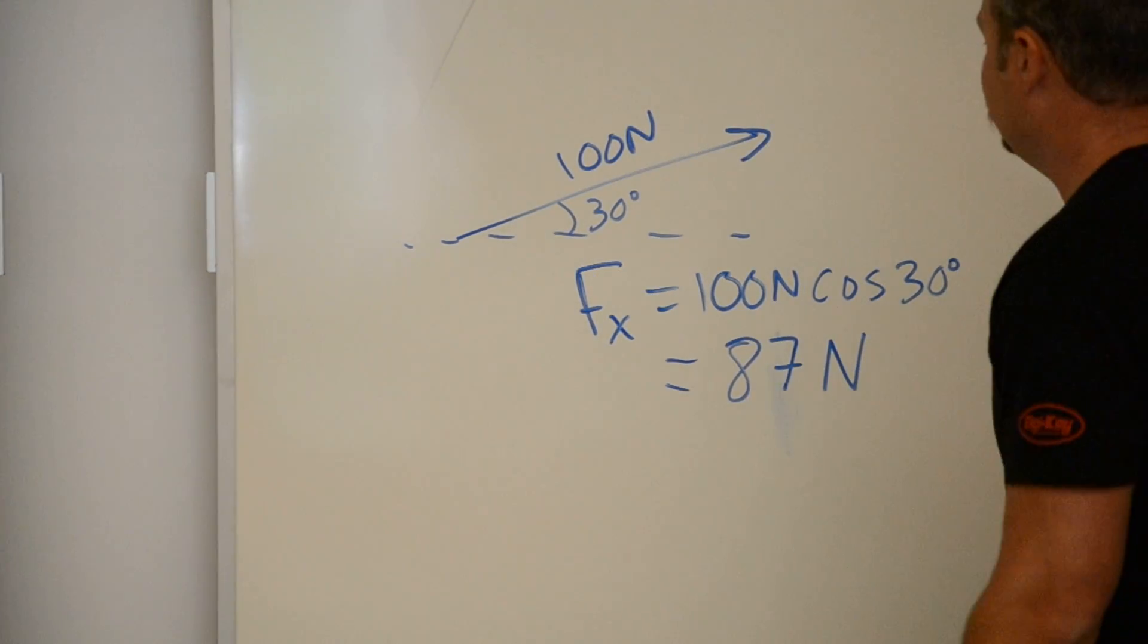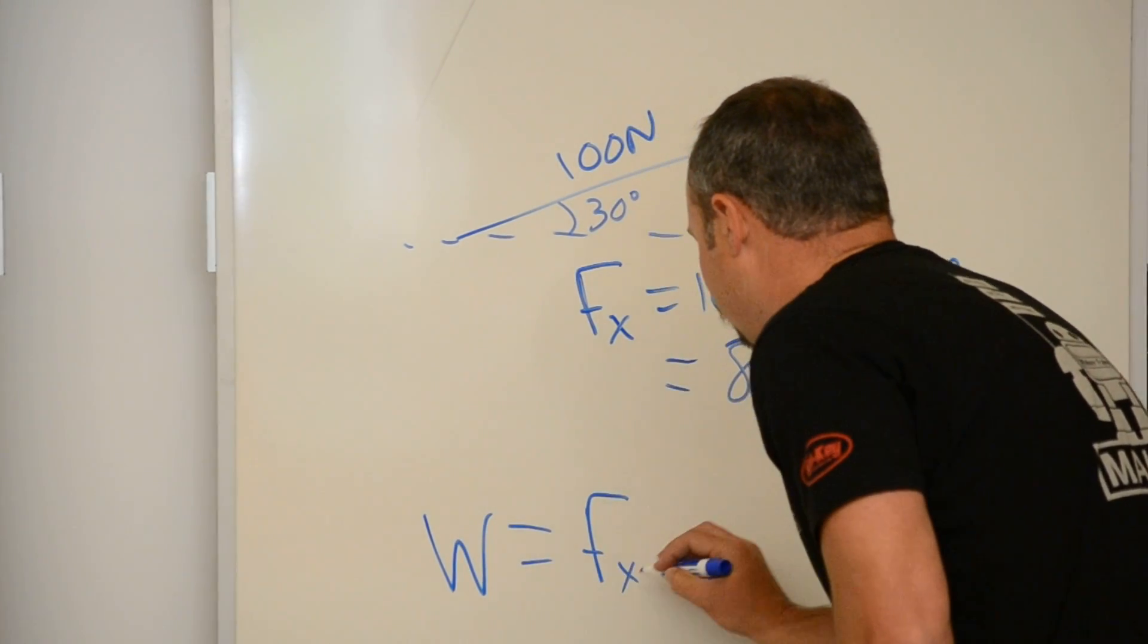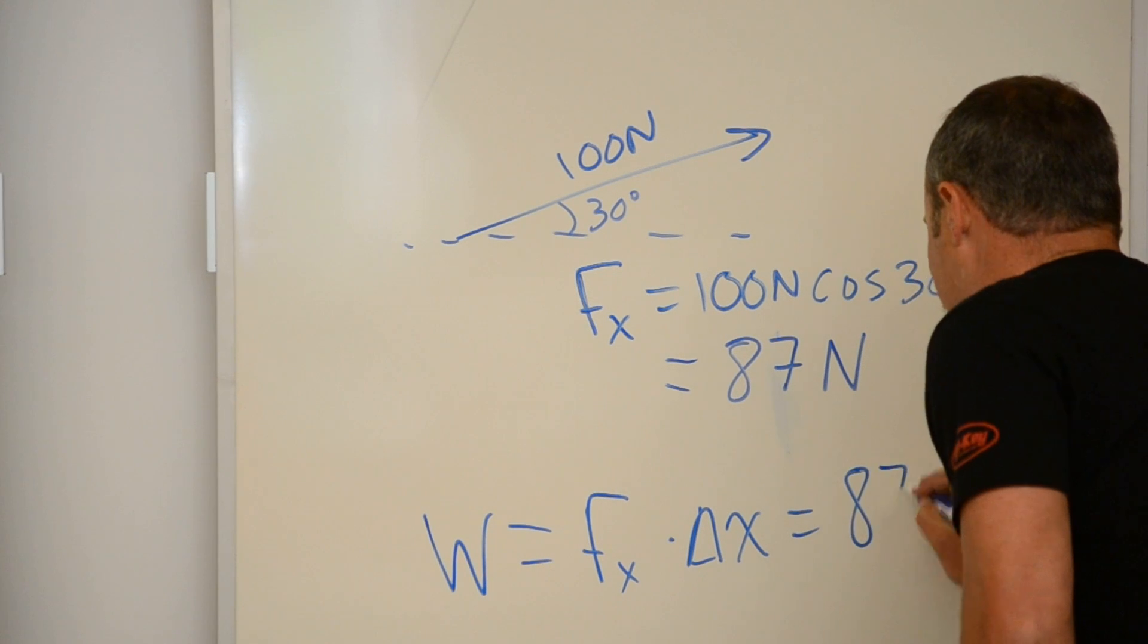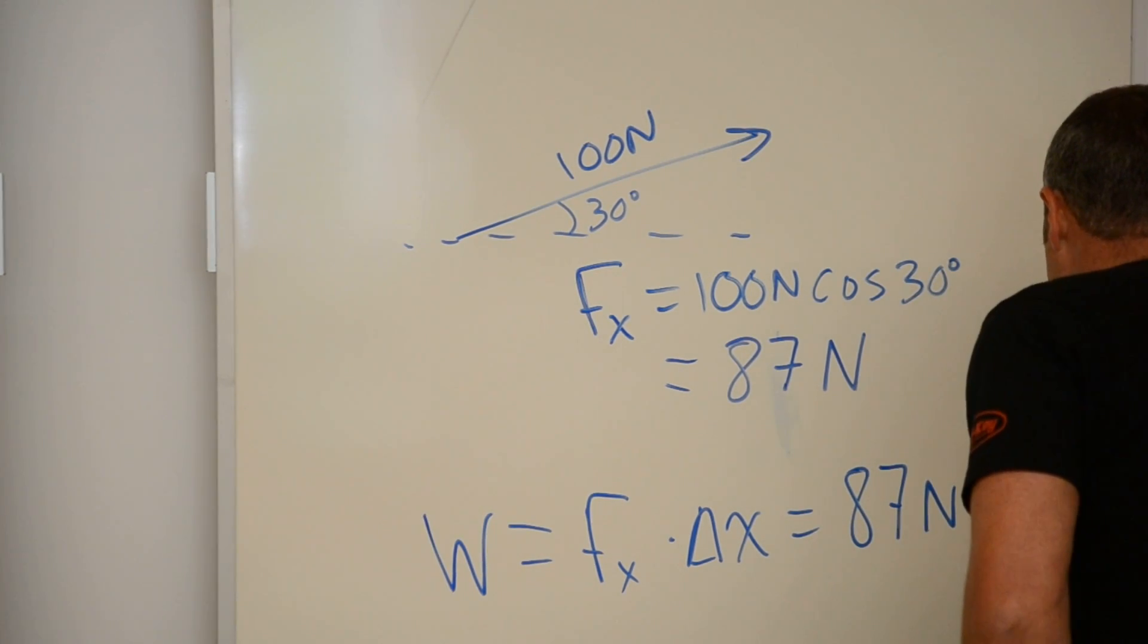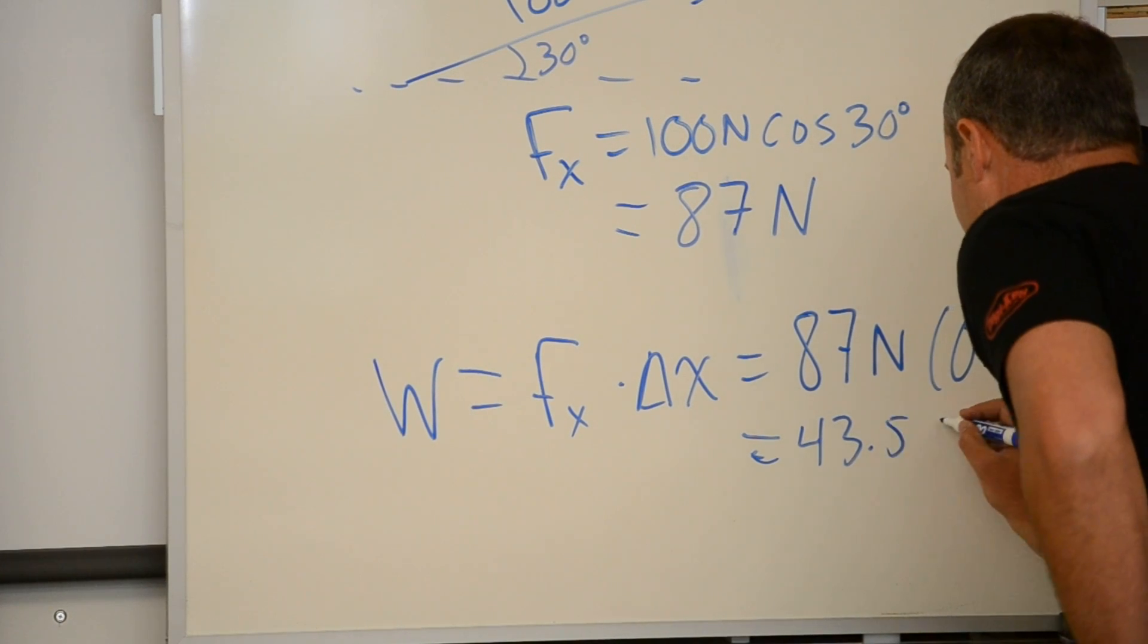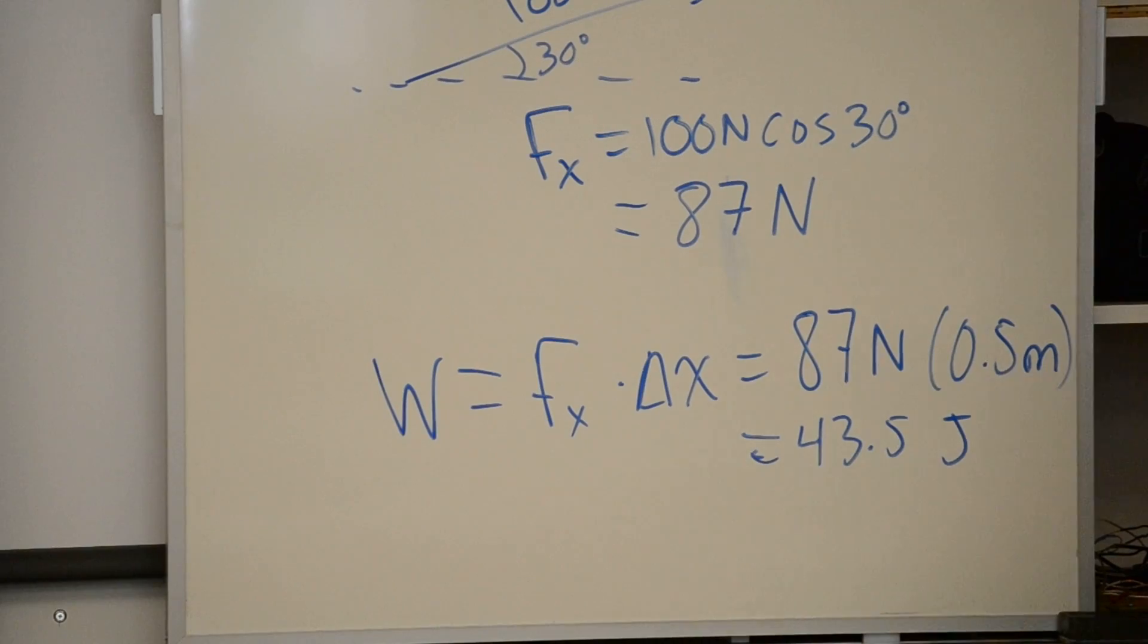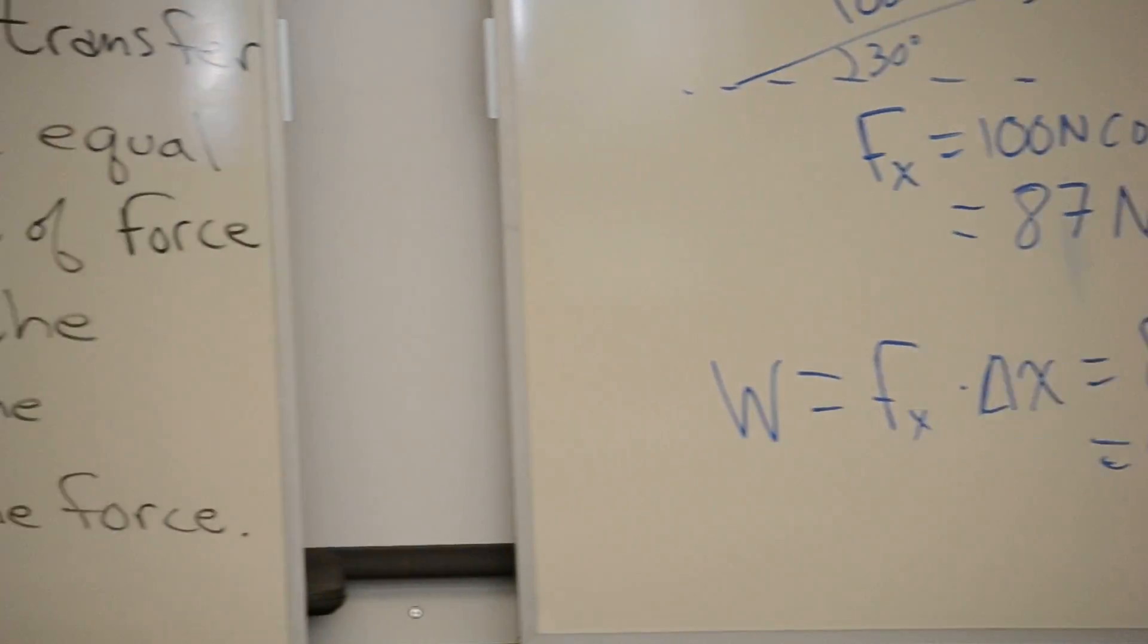And I went half a meter, so my work is equal to the x component of force times the displacement. So that's 87 newtons times 0.5 meters, so that's one half of 87 or 43.5. And that's joules. A newton meter is equal to a joule. So that's how much work was done in this situation.